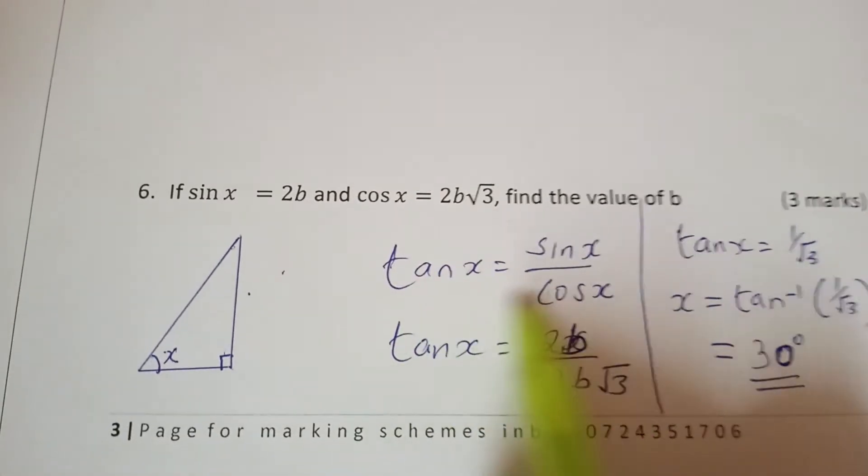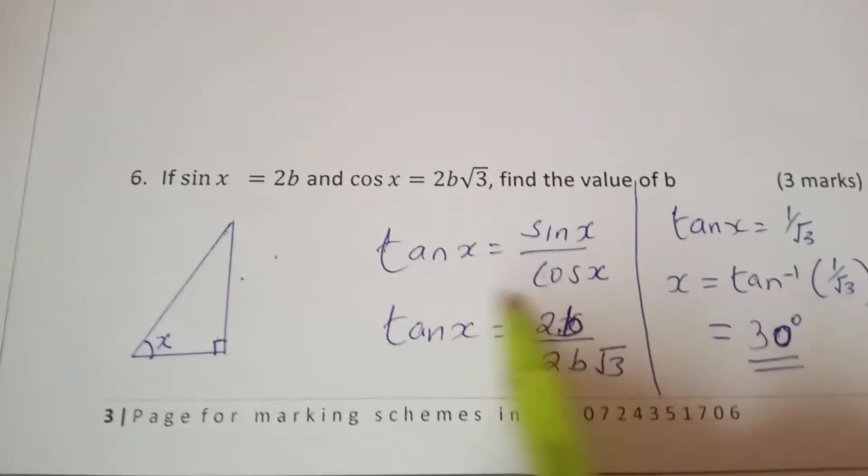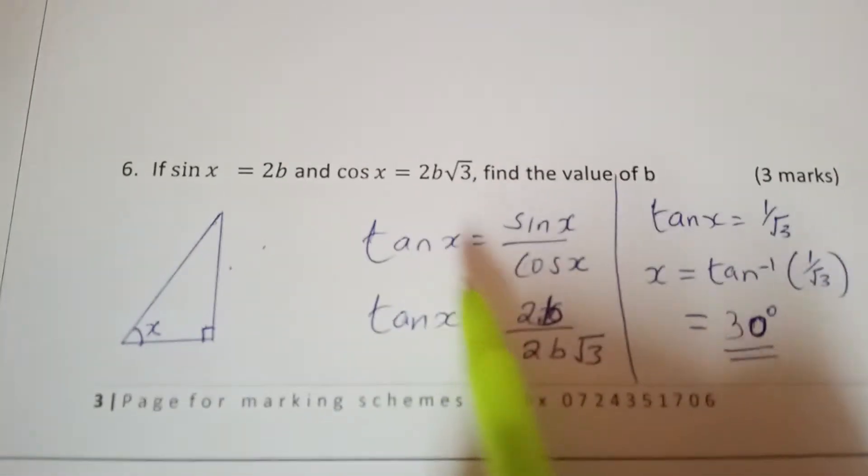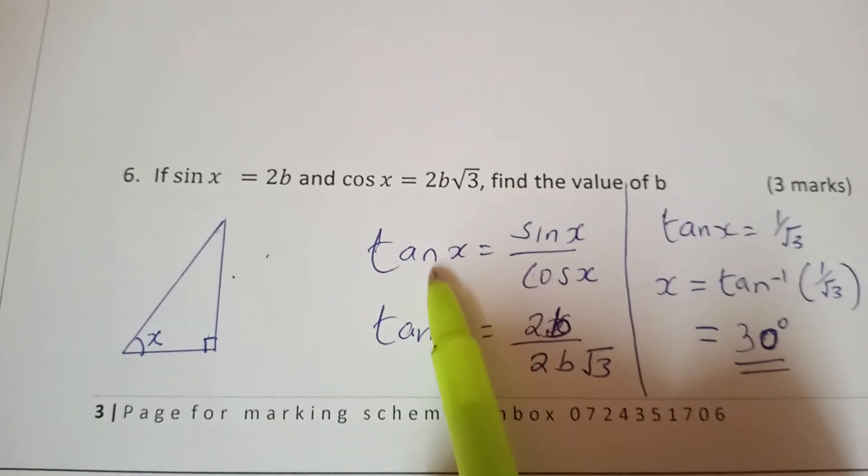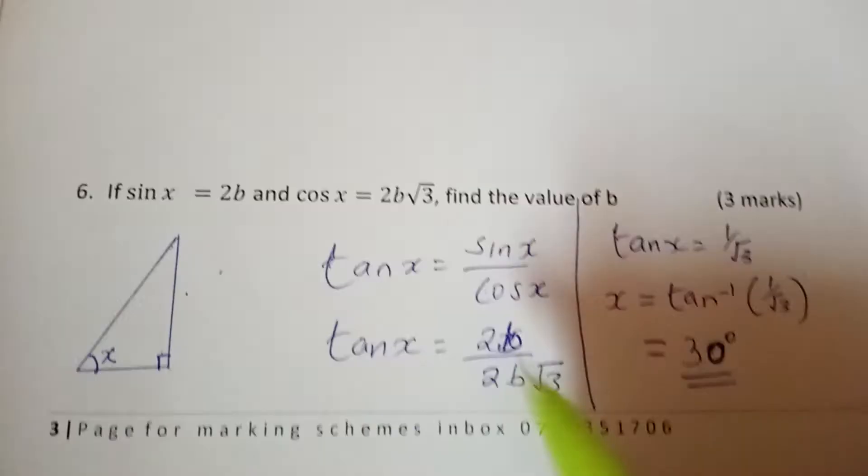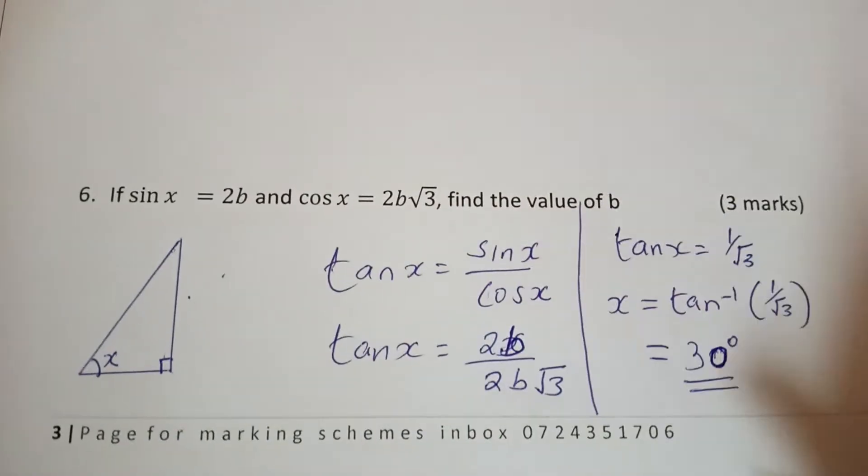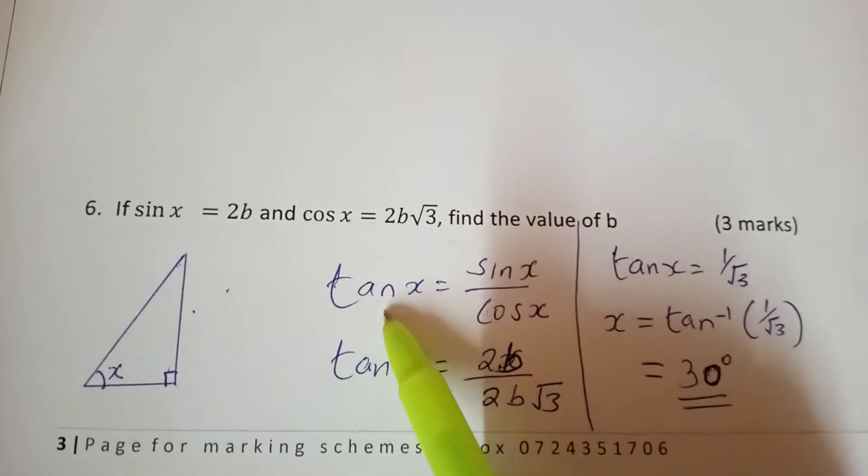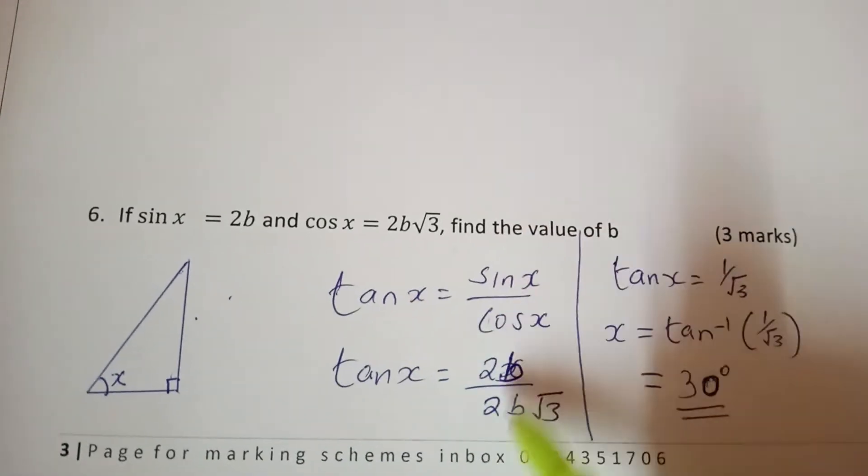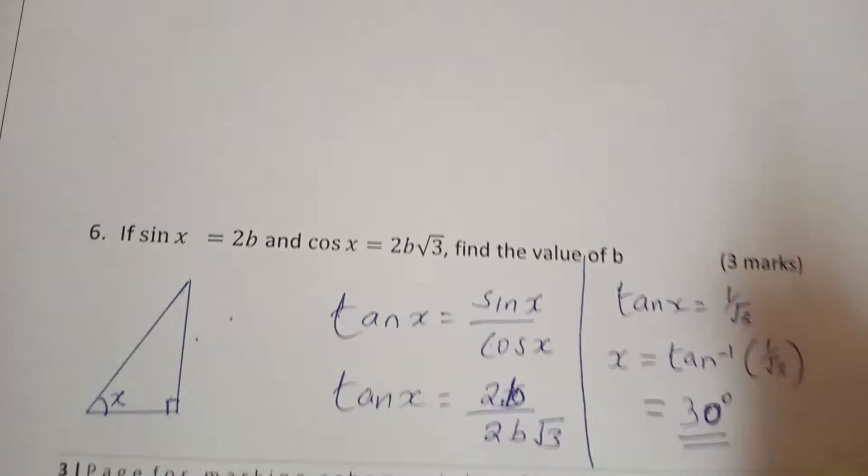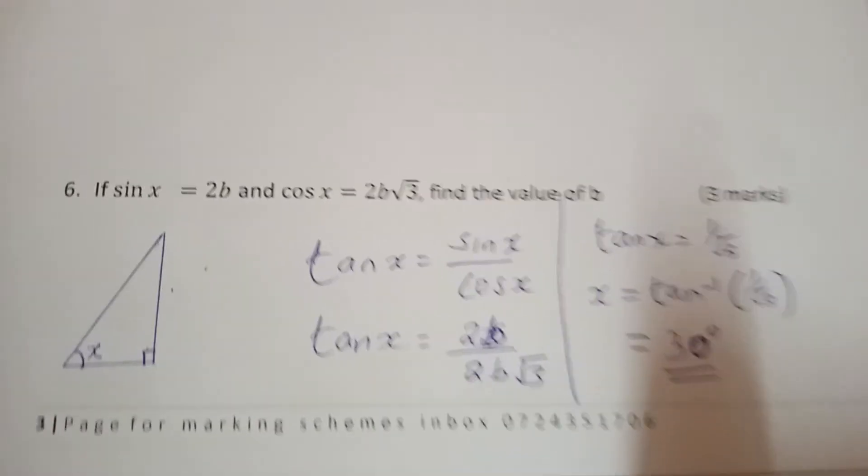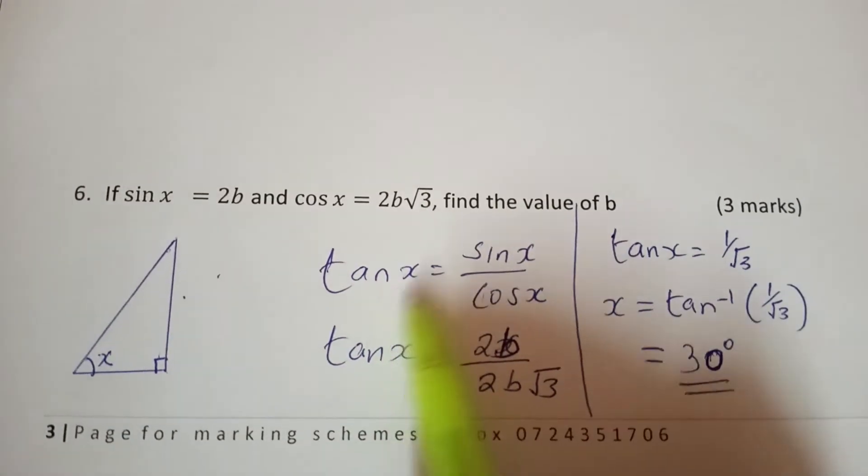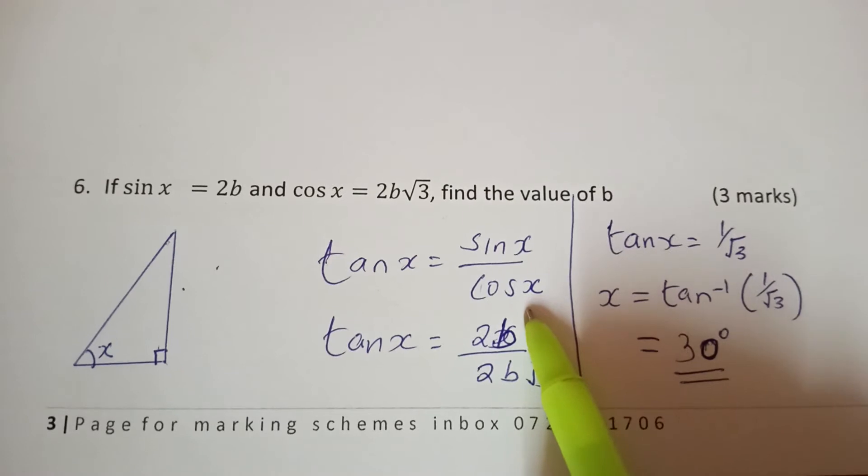You must know this concept here. Tan x is equal to sine x over cos x. But in most cases we use theta, so we say tan theta equals sine theta over cos theta. That is the concept that is applied here, so tan x is sine x over cos x.